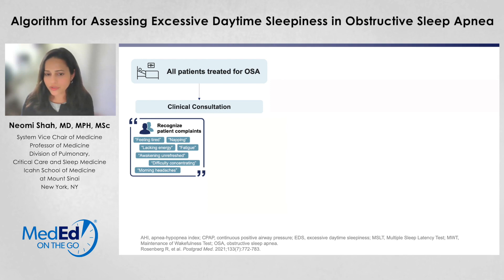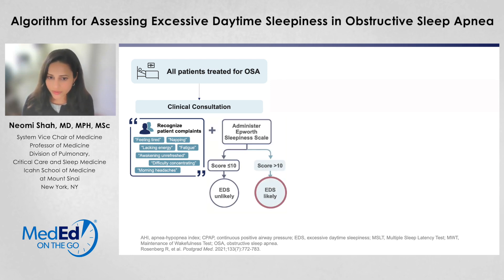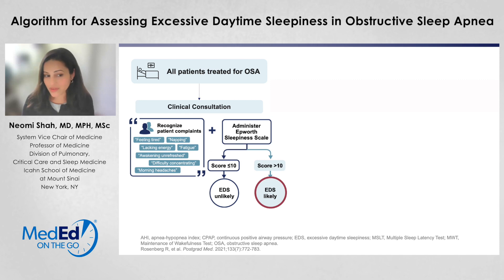The first thing that we are doing in all patients treated for obstructive sleep apnea in our clinical consultation is recognizing patient complaints that suggest sleepiness, such as napping, feeling tired, or not being able to stay awake at work. We then administer the Epworth Sleepiness Scale, which goes from 0 to 24, indicating excessive sleepiness when it's greater than 10.